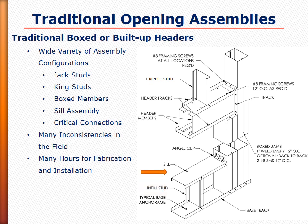To begin, let us review some of the traditional boxed and built-up header and jam assemblies. In this design you can see a typical window opening assembly. This assembly includes elements such as king studs or box studs which go the full height of the wall and make up the jam members, jack studs which go from the floor and sit underneath the header, a box beam for the header itself composed of two studs and two tracks, cripple studs above the header, a track section or angle clip for the header-to-jam connection, and a simple sill composed of a single track section.